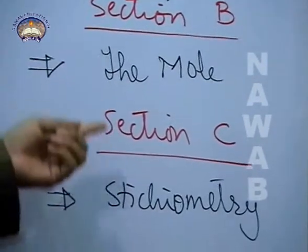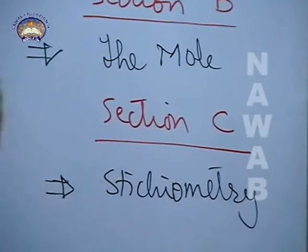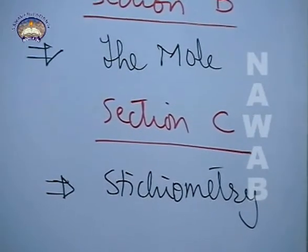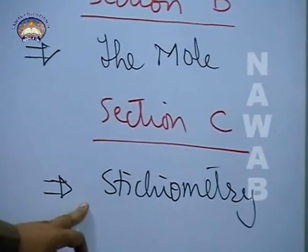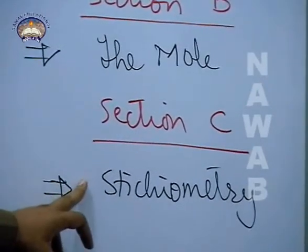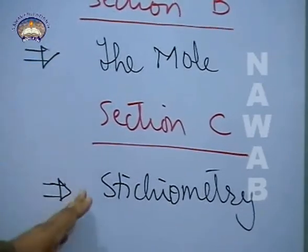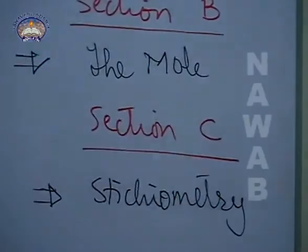In section C, although this is related to the mole, we will talk about stoichiometry. Stoichiometry means that calculations are based on the chemical equation. Balanced chemical equation, we will talk about stoichiometry.